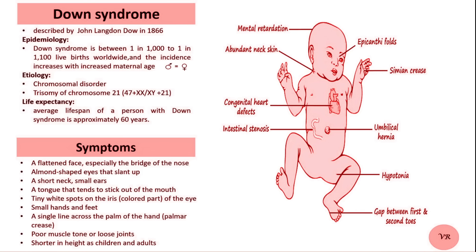However, it was not until later that the chromosomal nature of the condition was understood. In 1959, Jérôme Lejeune, a French geneticist, discovered that Down syndrome is caused by an extra copy of chromosome 21, a condition known as Trisomy 21.